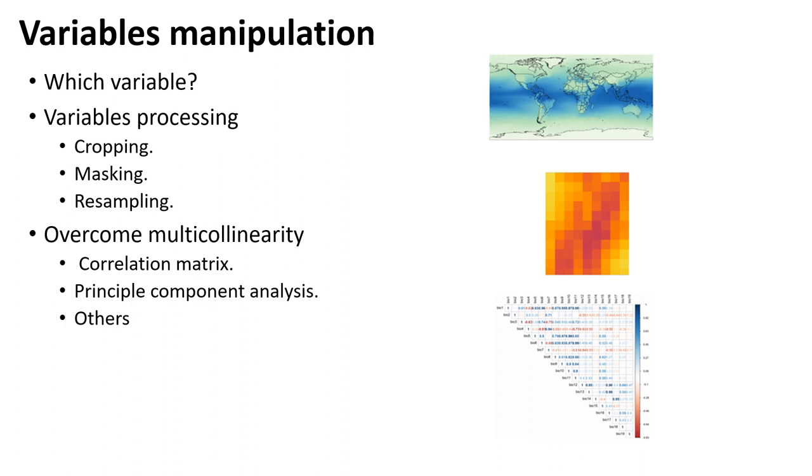How to deal with the variables. It's very important to figure out which variable you want to use, and then cropping and masking and resampling your variables on the area of interest. And you have to deal after that with multicollinearity.